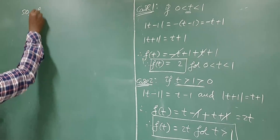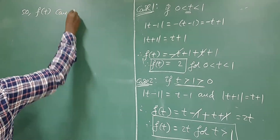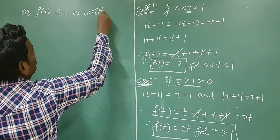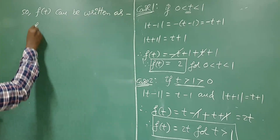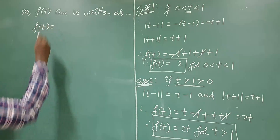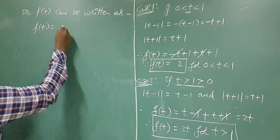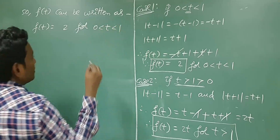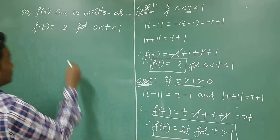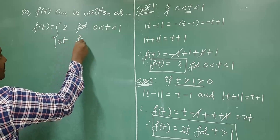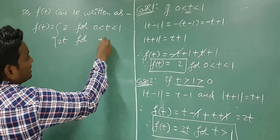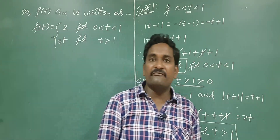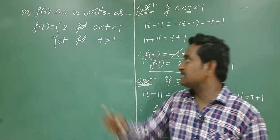The given function f(t) can be rewritten as: f(t) equals 2 for 0 less than t less than 1, and f(t) equals 2t for t greater than 1. In this way we redefine the given function, which is in modulus terms, into this piecewise form.